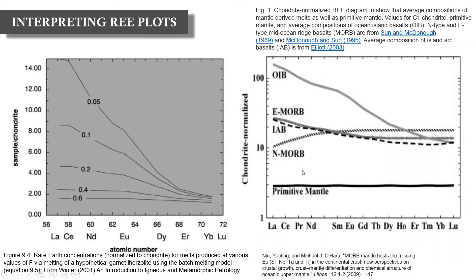This diagram on the right shows REE patterns of common reservoirs such as ocean island basalt, E-MORB and N-MORB, again chondrite normalized on a logarithmic scale. Primitive mantle is flat at approximately three times the chondrite concentration. N-MORBs, E-MORBs and OIBs show quite different patterns that we can compare with unknown samples — for example, a sample enriched in light REEs and depleted in heavy REEs may be more akin to OIBs, which is important for determining tectonic setting.